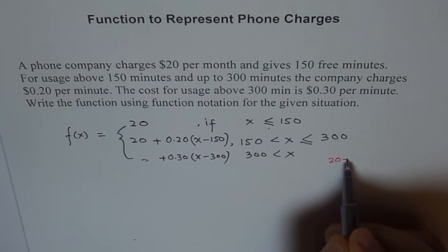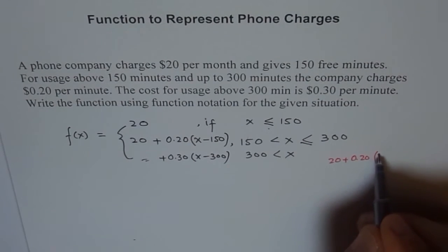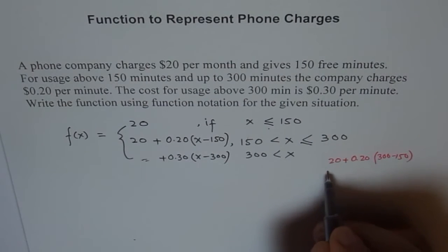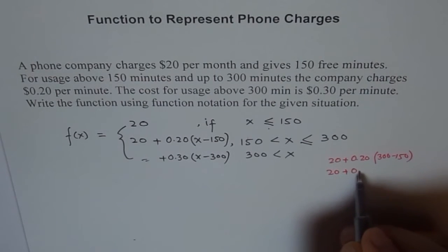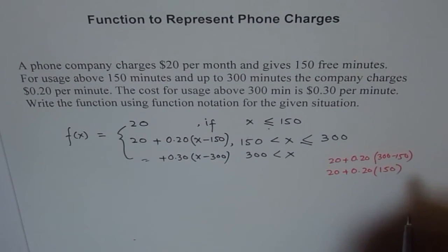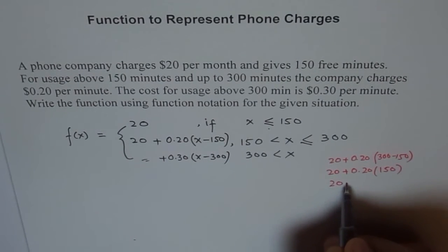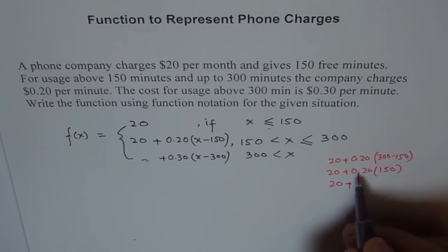So for 300 minutes, we will do it here, 20 plus 0.20 times 300 minus 150, which is 150, so 20 plus 0.20 times 150, which is 20 plus 0.2 times, so $30.